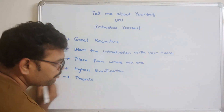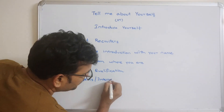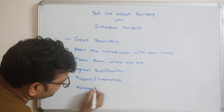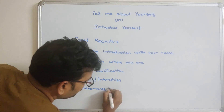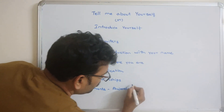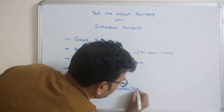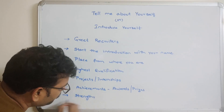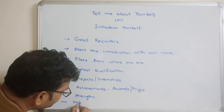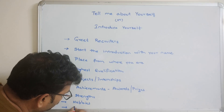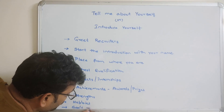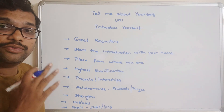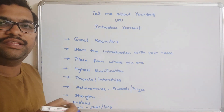The next points to cover are: projects or internships you have done, achievements such as awards or prizes, your strengths, your hobbies, and finally your goals — both short-term and long-term. Just write down everything on a piece of paper and keep on practicing before attending the interview.